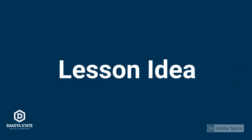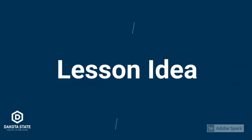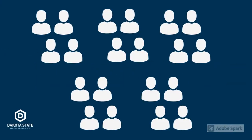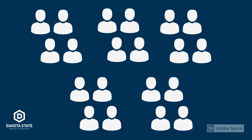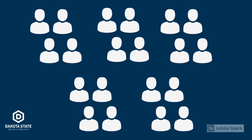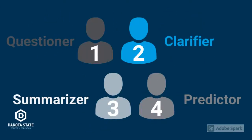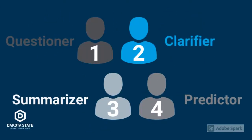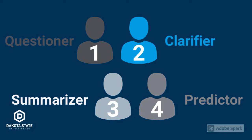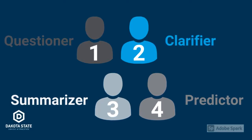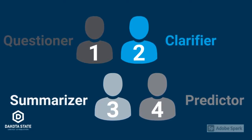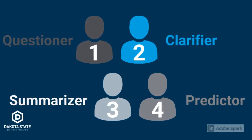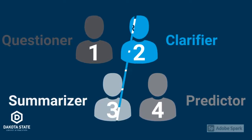Here's another way you could use reciprocal teaching. Begin by dividing your class into groups of four. Each student starts with one role in their group: questioner, clarifier, summarizer, and predictor.